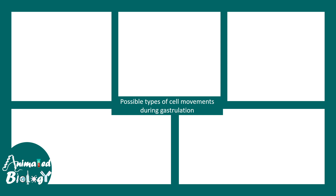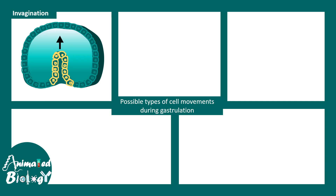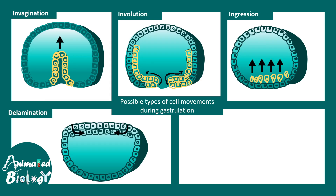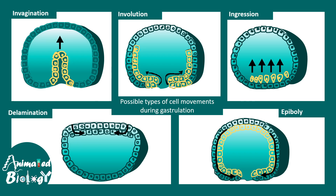The possible movements that can occur during the gastrulation phase are invagination, involution, ingression, delamination, and epiboly. These five types of movement are the basic fundamentals of gastrulation or morphogenetic movements. In this video we are going to break down each of these movements and try to appreciate when they occur and how they occur.